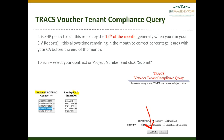We suggest that you run this when you run your EIV reports because you are already signed into Secure Systems. Doing so by the 15th of the month allows time to correct any issues with your CA before the end of the month. Your CA is required to complete their processing of your HAP before the end of the month, so you will need to be in touch with them if there are errors.